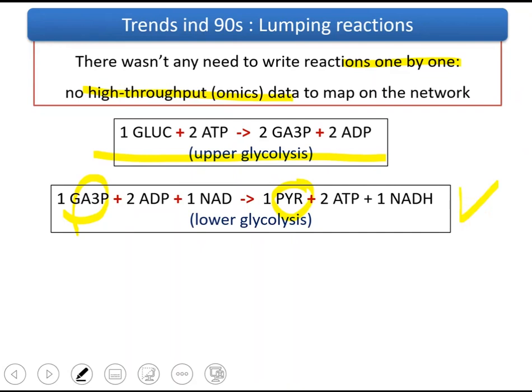That's why if you check papers from the 90s, you will see that there are like 20, 30, 50 reactions in those models. Because first, the biosynthetic reactions were not there because the biomass reaction was written in terms of metabolic precursors. And second, most of the reactions were in lumped format.